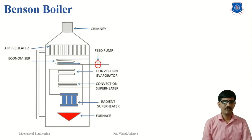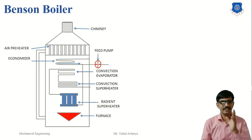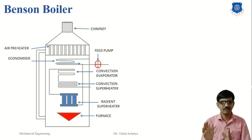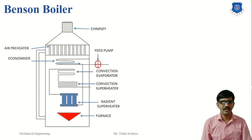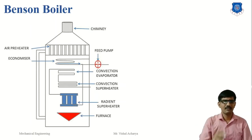The advantages of the Benson boiler: it is a drumless boiler, hence the weight is 20% less compared to other boilers; it is light in weight and occupies a small floor area; explosion hazard is almost negligible due to the use of smaller diameter tubes; it can be started very easily within 15 minutes; it avoids bubble formation due to supercritical pressure; transportation is very easy; and it can achieve thermal efficiency up to 90%. The average operating temperature is 650°C, pressure is 250 bar, and generating capacity is 135 tons per hour.